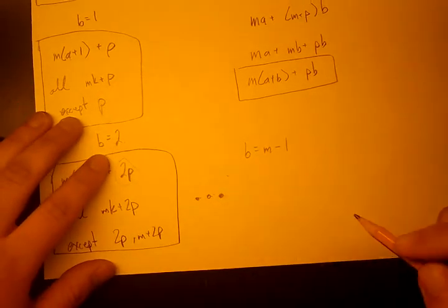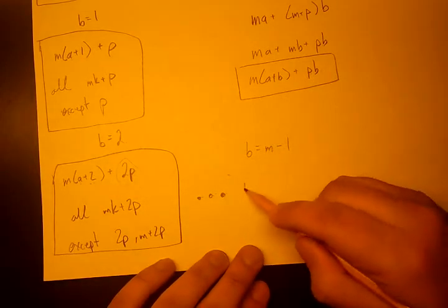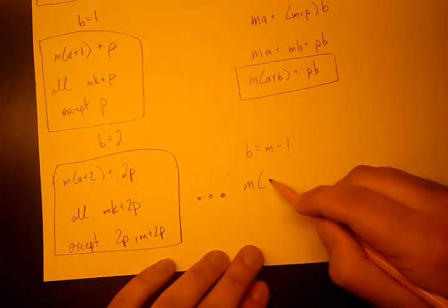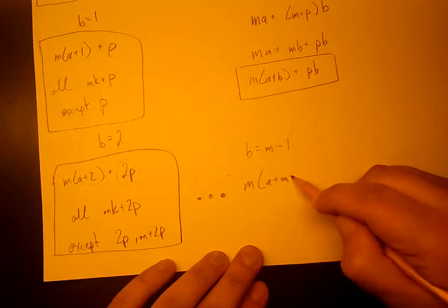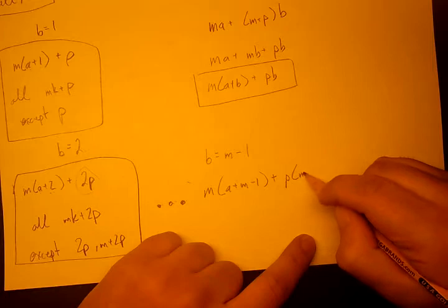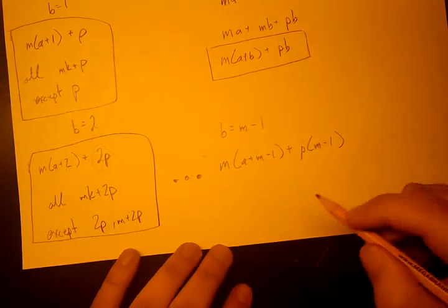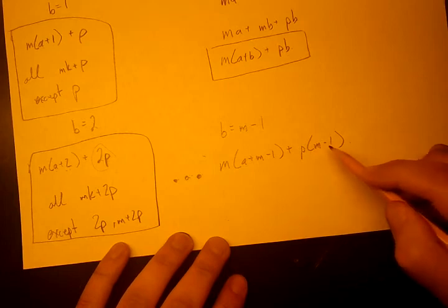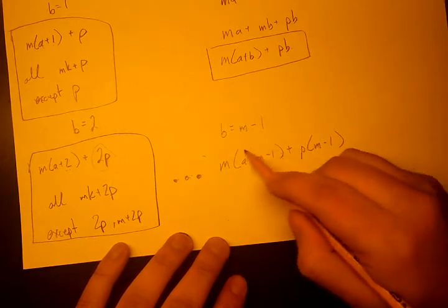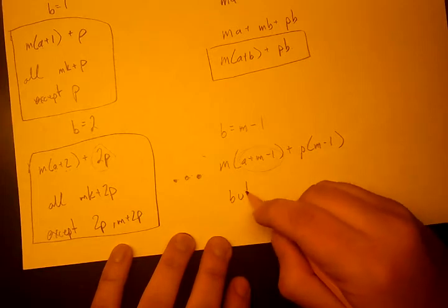Let's just use the same methodology. These dots indicate all the cases in between. So now we're going to let b equals m minus one. So it's going to be m(a + m - 1) + p(m - 1). So we can form all of these, essentially, except but.